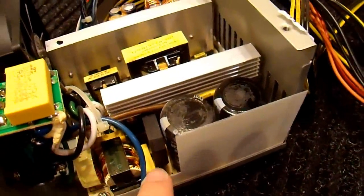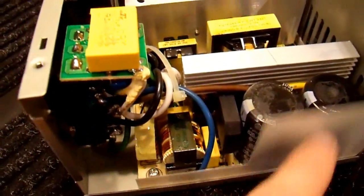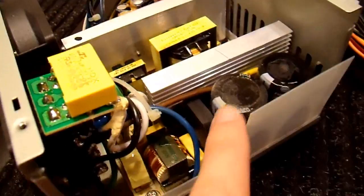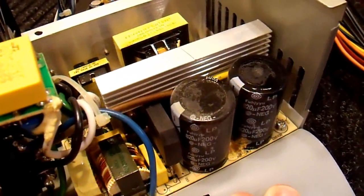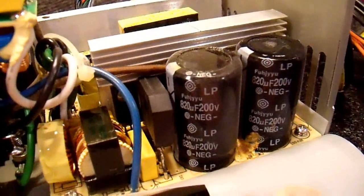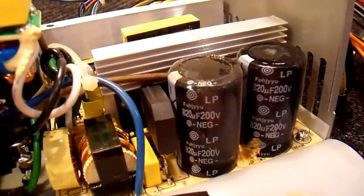Runs through some more AC film caps down there, those bright yellow things. And then it runs into this bridge rectifier. And from there it goes into the two high voltage input bulk caps. These are rated for 200 volts DC, 820 microfarads each.